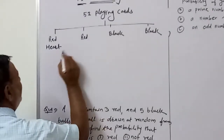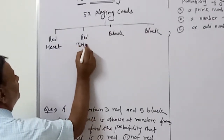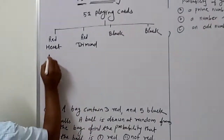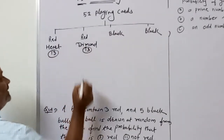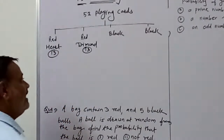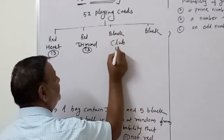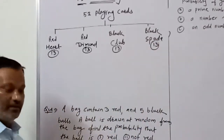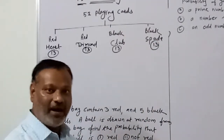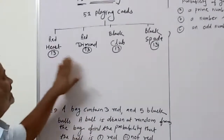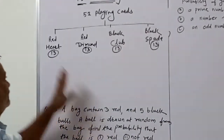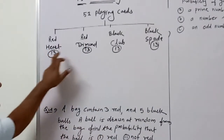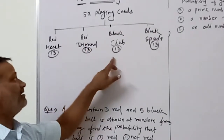After heart comes diamond. Heart and diamond are both red cards. Then there is club and spade, which are both black cards. Each suit contains 13 cards - heart, diamond, club, and spade - with heart and diamond being red, and club and spade being black.